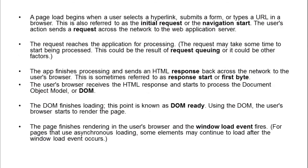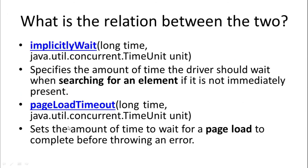That is why we have implicit wait. It specifies the amount of time the driver should wait when searching for an element if it is not immediately present — we are allowing some time for this element to appear in DOM. Page load timeout sets the amount of time to wait for a page load to complete before throwing an error. The page load still happens, and during the page load, implicit wait is also working because DOM is getting processed during the page load.